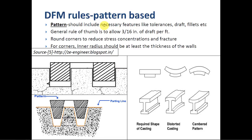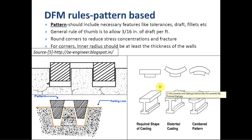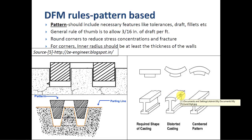Regarding DFM rules for pattern design, the pattern must include features like tolerances and draft. Since surface finish from sand casting is typically poor, further machining is required, so those allowances must be considered. A general rule of thumb is to allow 3/16 inch of draft per foot when removing the pattern from the mold, avoiding mold cracks and stress concentration zones. Corners should be rounded to avoid stress concentration and fractures, with the inner radius being at least the wall thickness. The pattern must also accommodate the camber that occurs during casting.